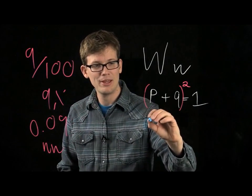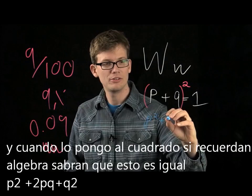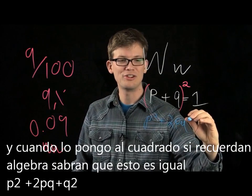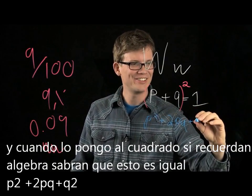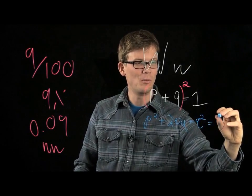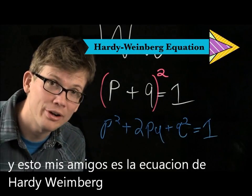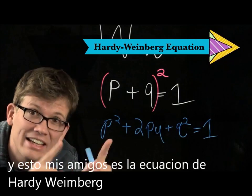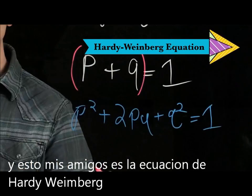Plus q squared equals 1. And that, my friends, is what Hardy and Weinberg did — and it is the Hardy-Weinberg equation. So p squared is the odds of it being WW homozygous dominant, 2pq is the heterozygotes, and q squared is the homozygous recessive.